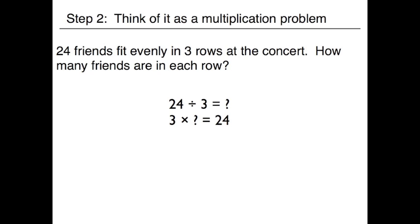I wonder if I can use multiplication to help me solve the division equation. Step 2 is to think of the division equation as a missing factor multiplication problem. I can think of the missing quotient in my division problem as the same as the missing factor in the multiplication problem. So now I am looking at the equation 3 times what equals 24.